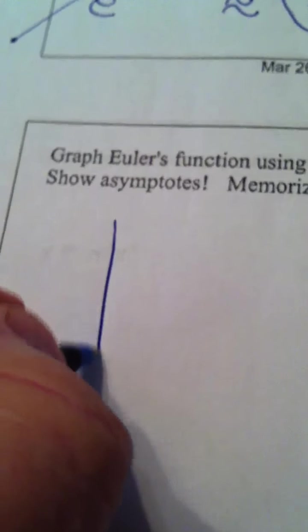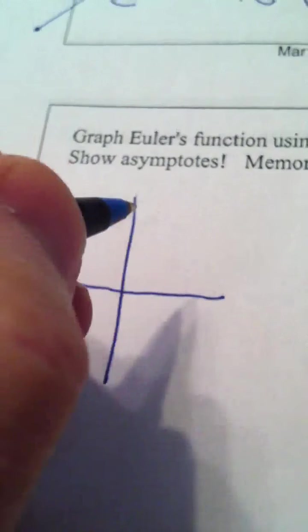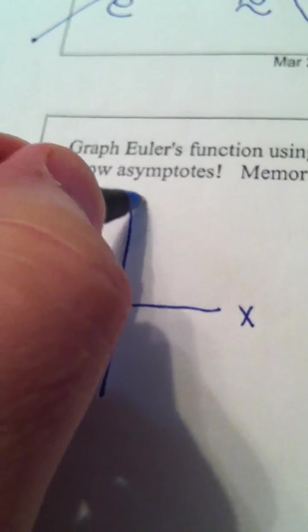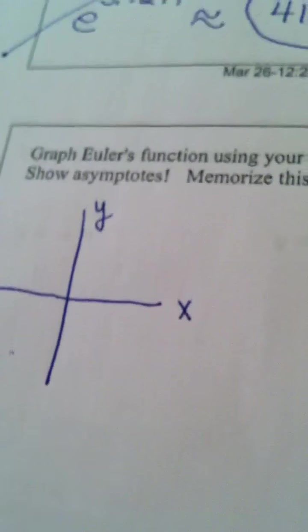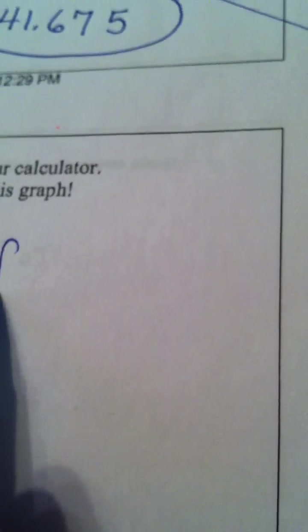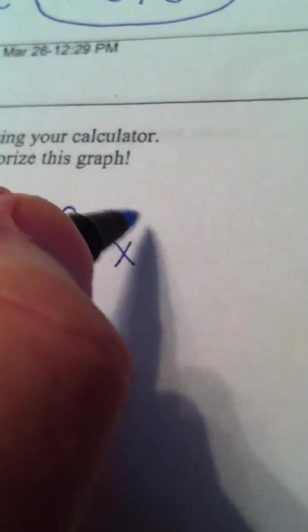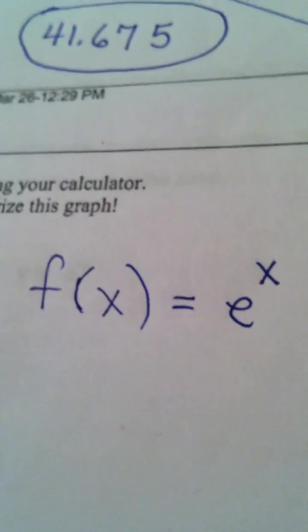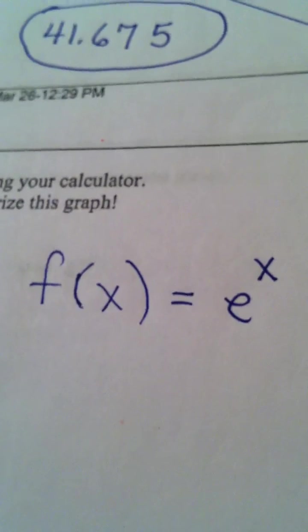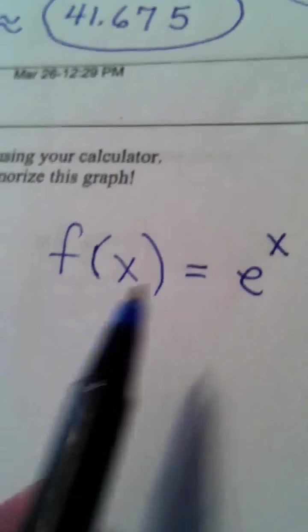We're eventually going to be drawing a graph here on this piece of graph paper. The function f of x is Euler's function, which is e to the x power. That's Euler's function. It's an exponential function whose base is e.